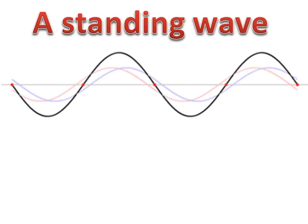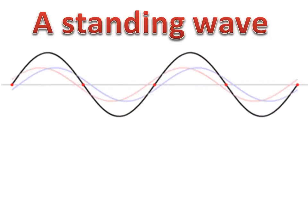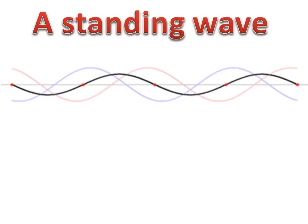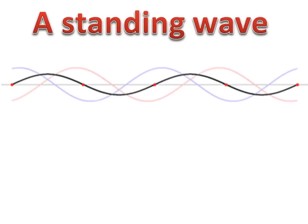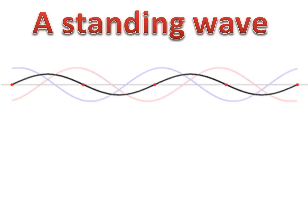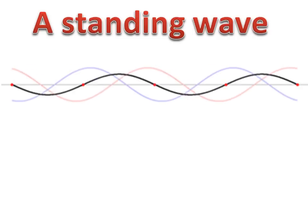So what can you notice about that black wave there? Well, it's got little points where it's not moving, those little red dots, and we have distinct rise in amplitude when the blue and red waves interfere constructively.